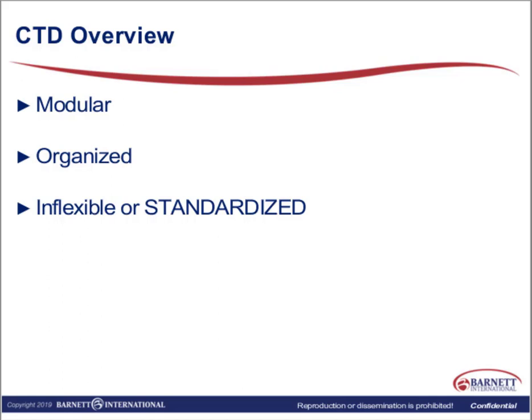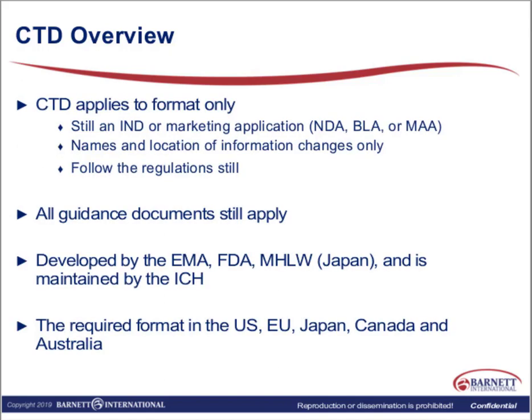The CTD is a very modular format. It's well organized and broken down into subsection within subsection. It's an inflexible structure, which basically means it's standardized — and that was the whole purpose of the CTD, to have this standardized system for doing drug applications. One thing to keep in mind is that the CTD applies to format only. What actually goes into your CTD will depend on whether it's an IND or a marketing application, whether that's an NDA, BLA, or MAA. The names and location of the information is what changes, but you still need to follow all of the regulations associated with the specific information that should be provided. You can look up any of the subsections of the CTD and you'll find guidance documents that apply for each subsection giving more detail on the content.